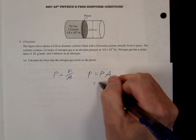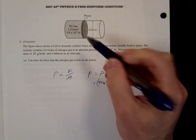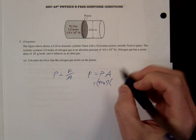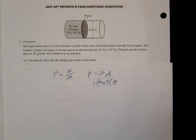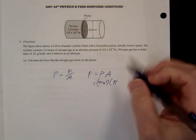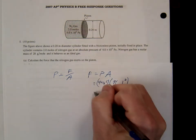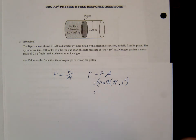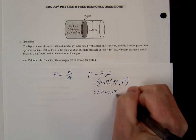So our pressure was four times ten to the fifth. And our area, this is a circle, right? So that would be pi r squared. And did they give us our r? They gave us our diameter, right? So we're going to find the radius and square out the radius. Alright, so the answer is 1.3 times ten to the fourth newtons.